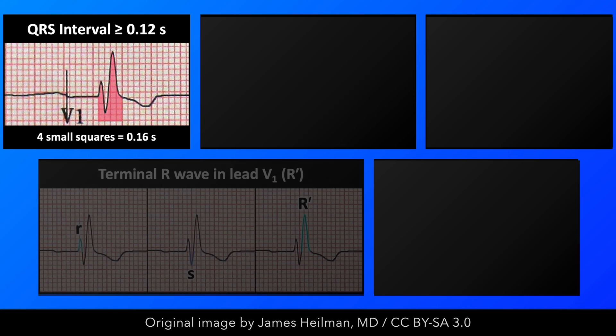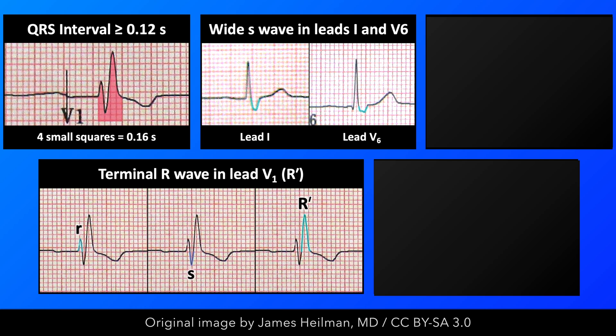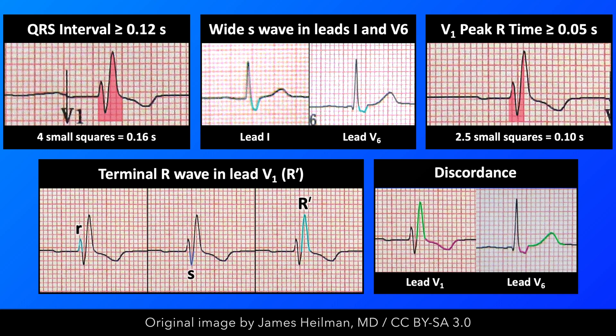To quickly recap, the ECG features associated with a right bundle branch block include QRS prolongation, a large terminal R-wave in right-sided leads, a broad or slurred S-wave in left-sided leads, a prolonged peak R-time in V1, and discordance of the ST-segment and T-wave.